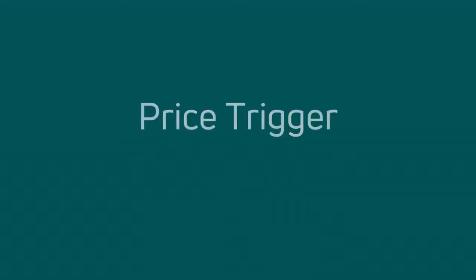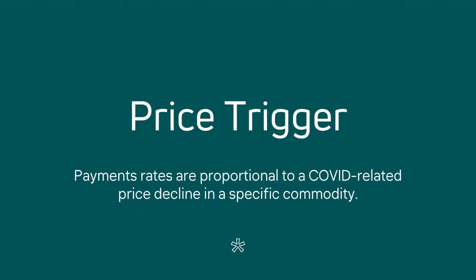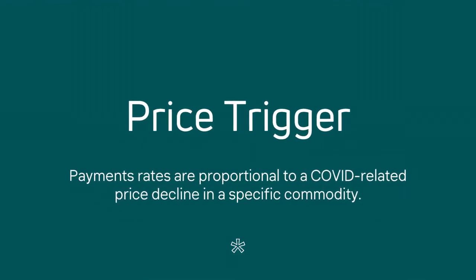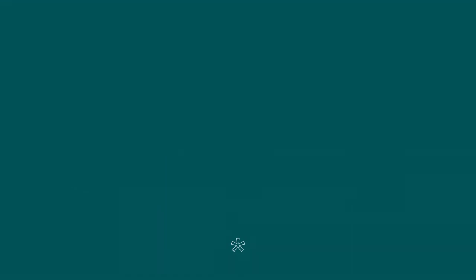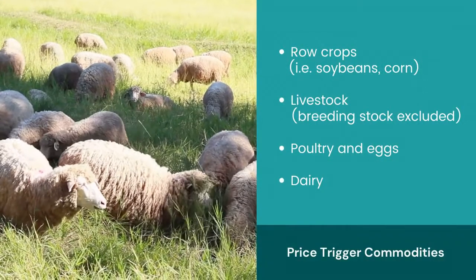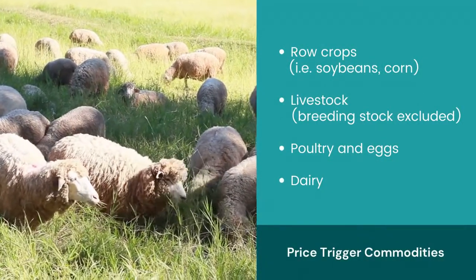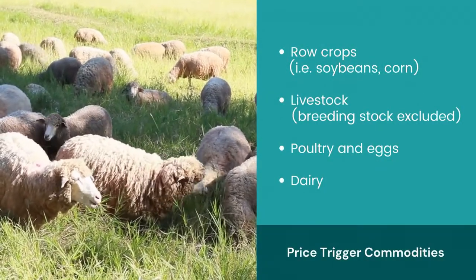The first method of payment calculation is called price-trigger. Price-trigger commodities have payment rates that are proportional to COVID-related price declines of each specific crop. Eligible price-trigger crops include commodity row crops, most livestock, poultry, eggs, and dairy.